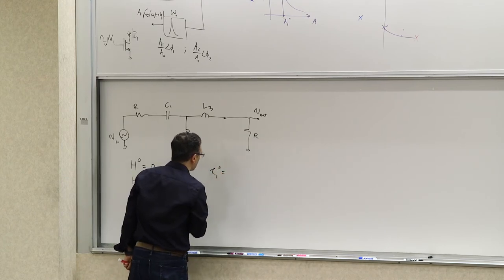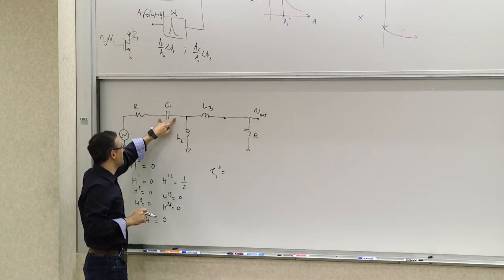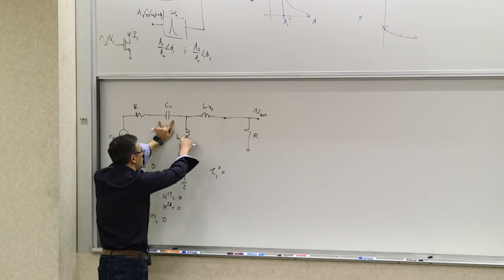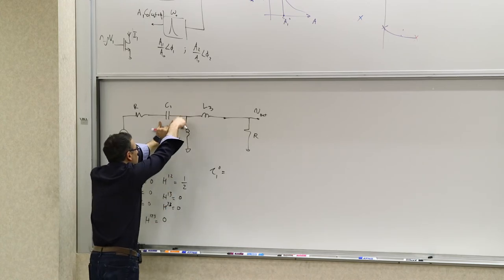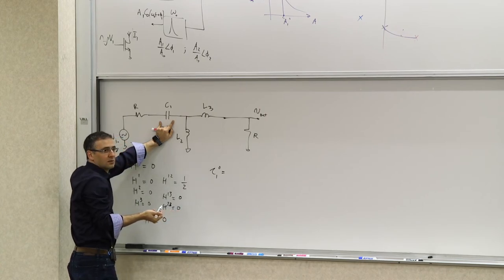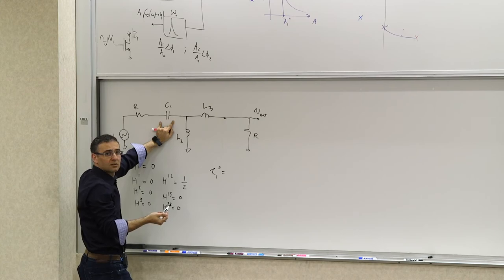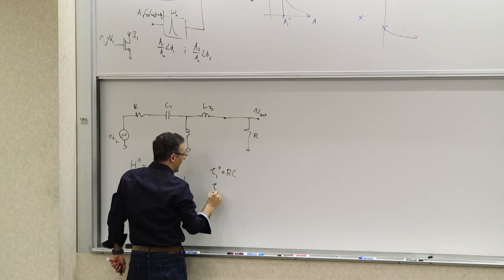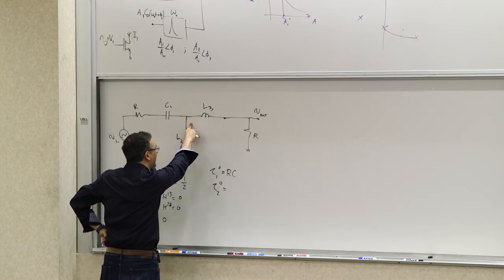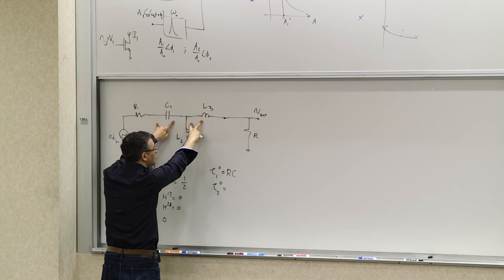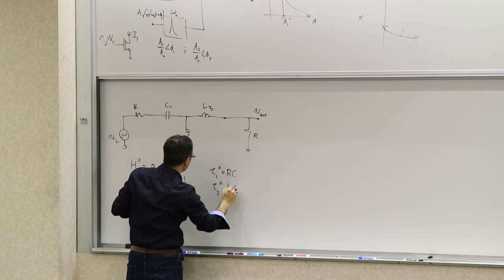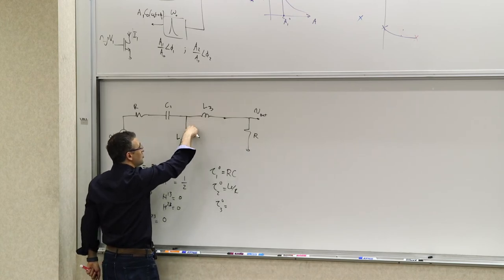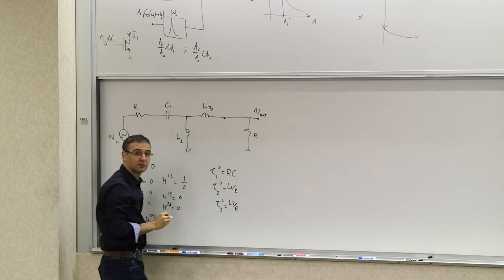Now the zero-value time constants. Tau_1,0: C_1 sees source resistance R (with voltage source shorted and inductors zero-valued as shorts), so tau_1,0 = R·C_1. Tau_2,0: L_2 sees R (C_1 open, L_3 shorted), so tau_2,0 = L_2/R. Tau_3,0: L_3 sees R (C_1 open, L_2 shorted), so tau_3,0 = L_3/R.